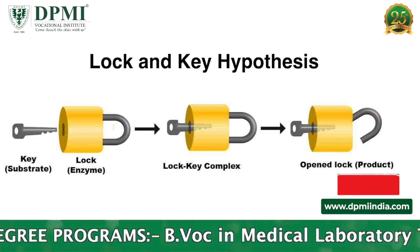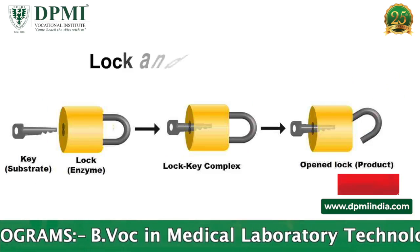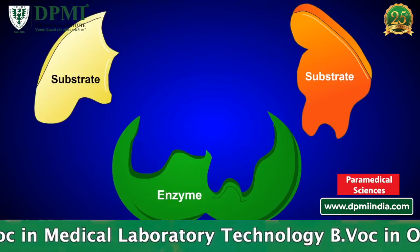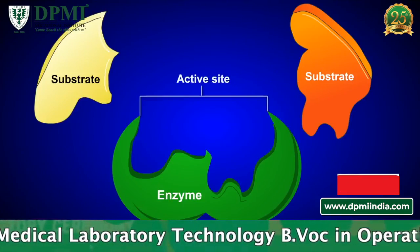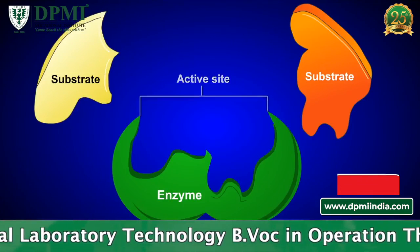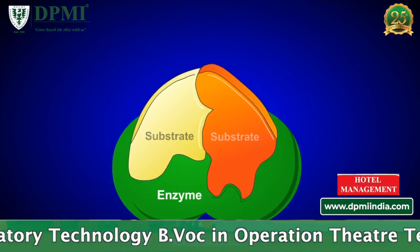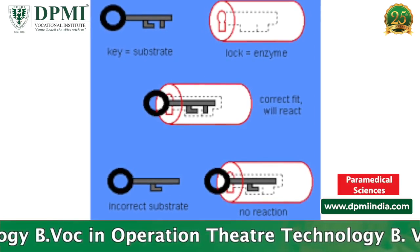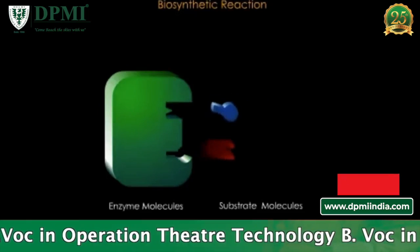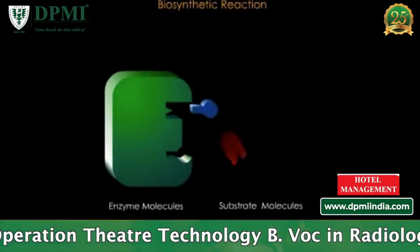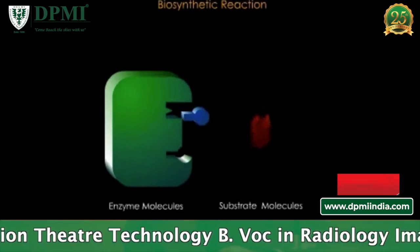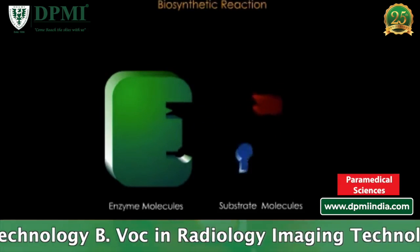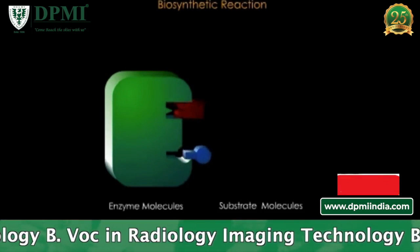The Lock and Key Model was proposed by German chemist Emil Fischer in 1899. It states that the shape of the active site of an enzyme is exactly complementary to the shape of the substrate. The substrate is like a key that fits in the enzyme's active site — only the correctly sized and shaped substrate would fit in the active site of an enzyme.